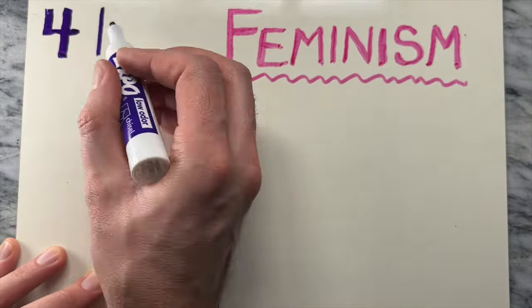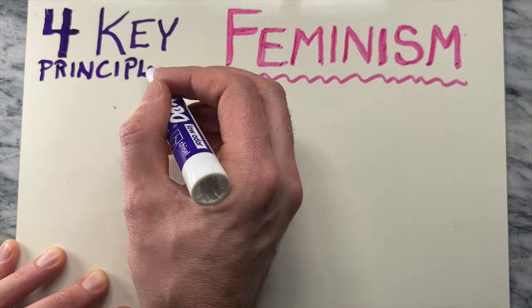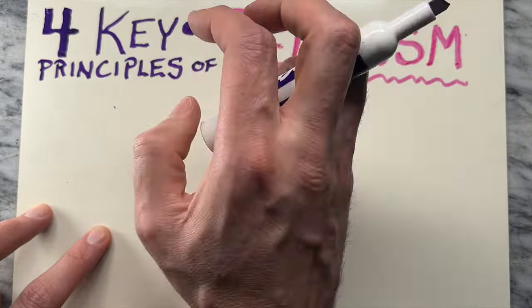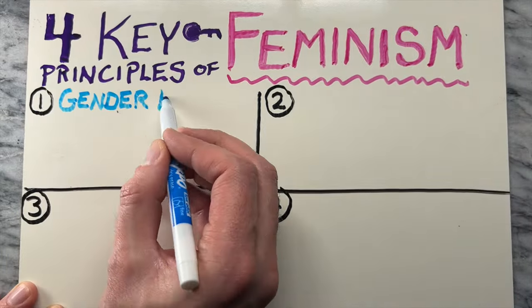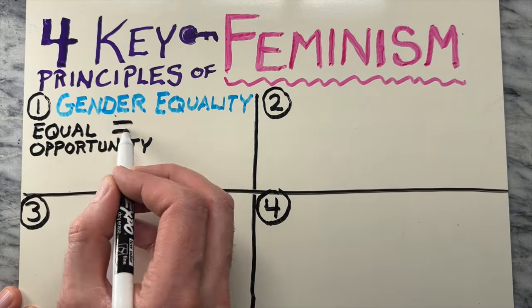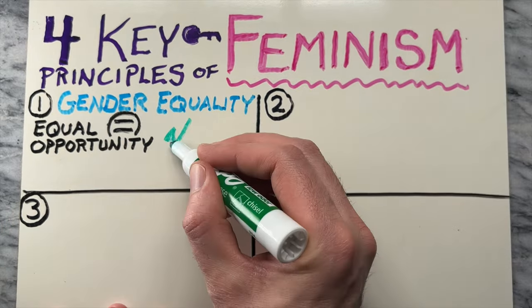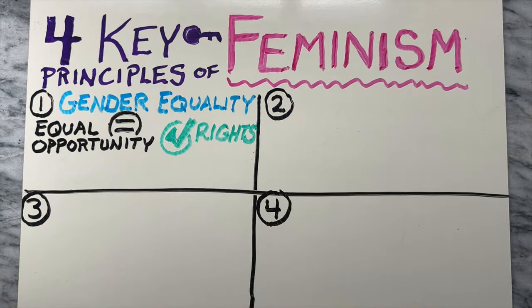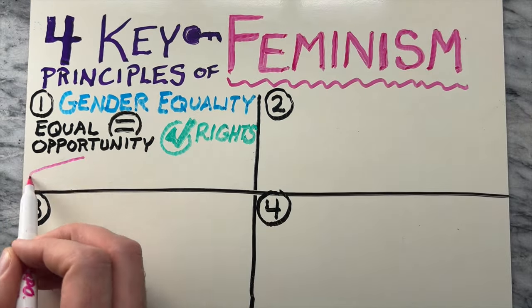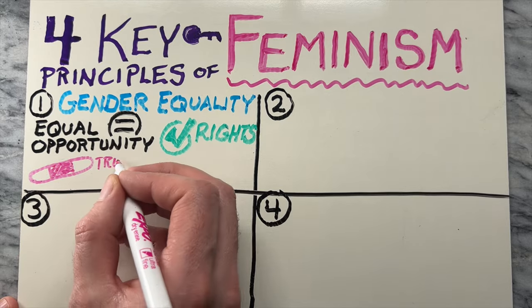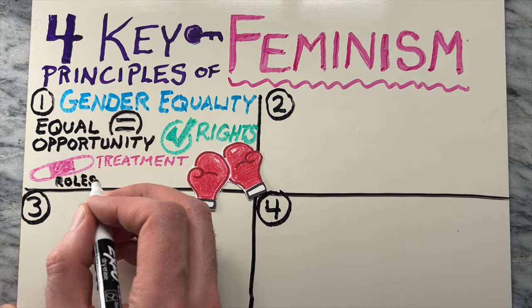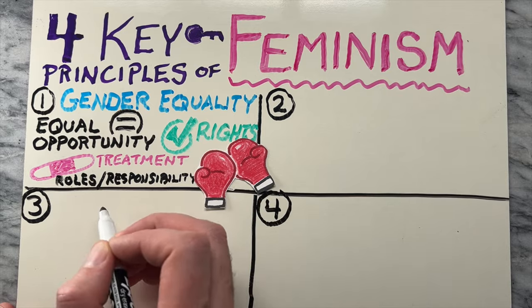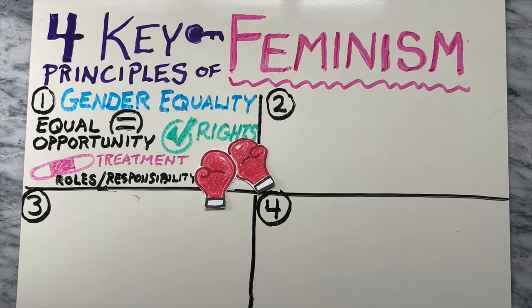There are four key principles of feminism. The first is gender equality. Feminism aims to establish equal opportunities, rights, and treatment for people of all genders, challenging the idea that certain roles, responsibilities, or privileges are inherently tied to one's gender.